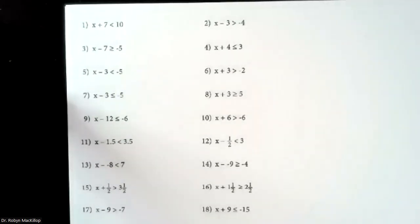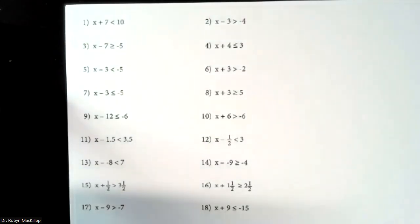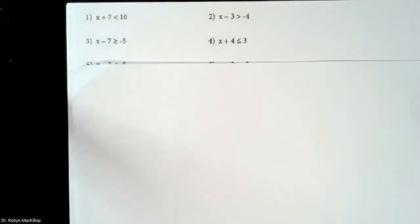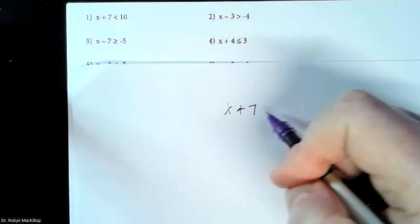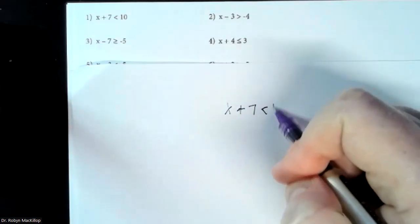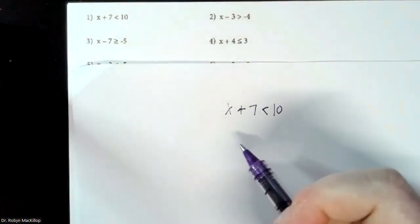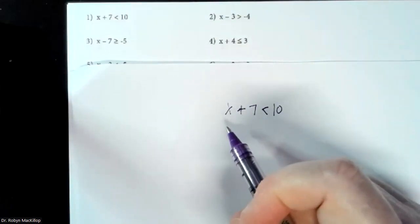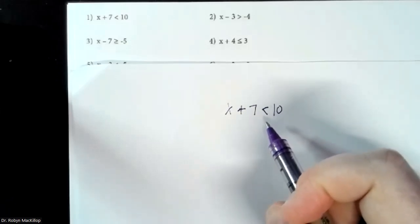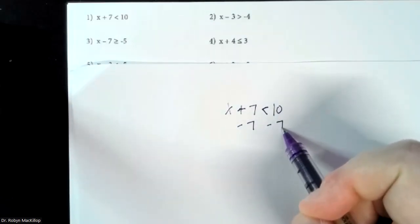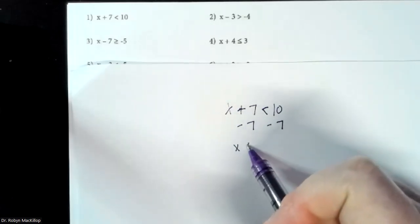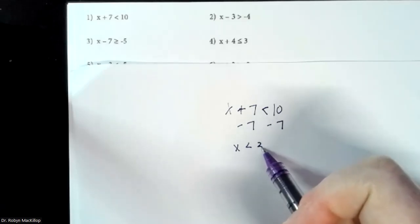They kind of look like the problems we were doing last week with the equal sign, right — x plus 7 equals 10. So the format is basically the same, the process. Let's start with number one: x plus 7 is less than 10, not equal to. We're going to do the exact same thing we did before. We're going to get rid of the 7 because we want one variable and one number on either side of the inequality sign. So we're going to take away 7 on this side as well. That leaves us with x is less than 10 minus 7.